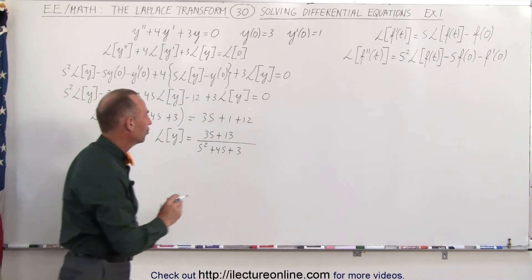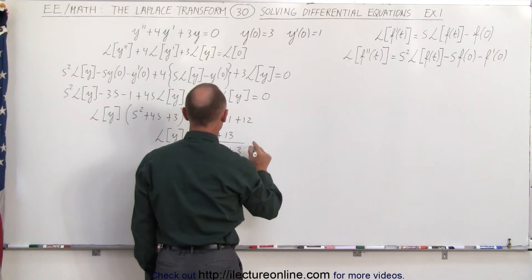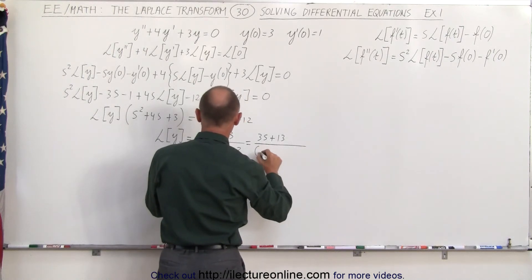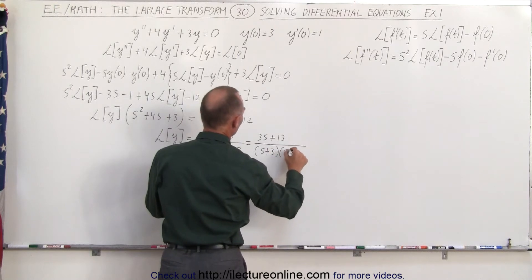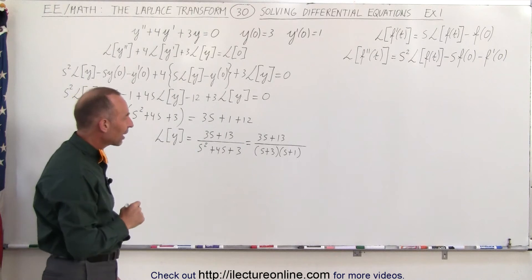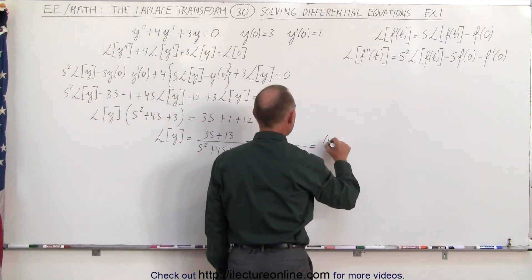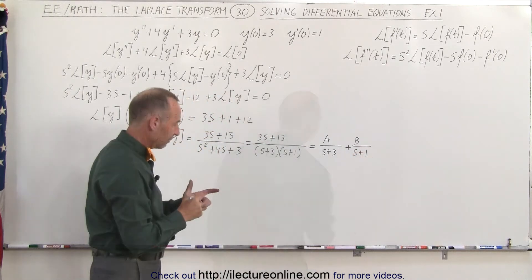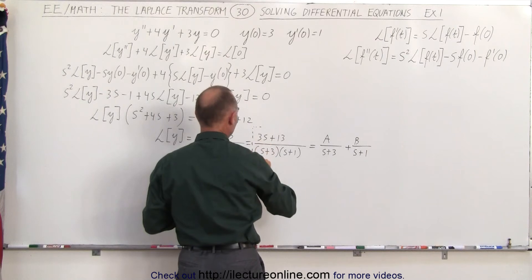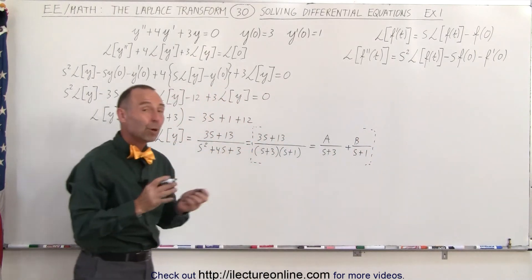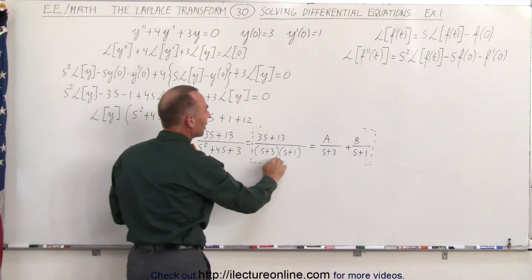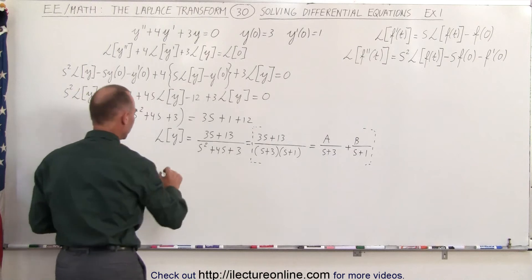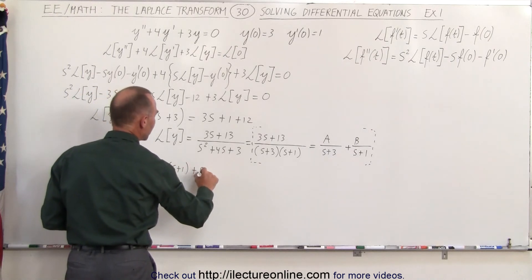The denominator is factorable, so we can write this as (3s + 13) divided by (s + 3)(s + 1). I'm going to use the technique of partial fractions, which means this has to equal A divided by (s + 3) plus B divided by (s + 1). Multiplying both sides by the common denominator (s + 3)(s + 1), we get: 3s + 13 equals A times (s + 1) plus B times (s + 3).